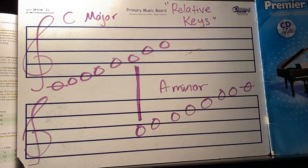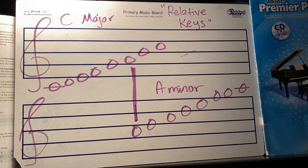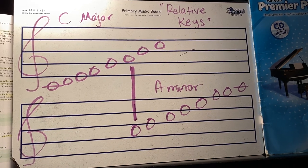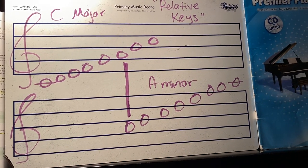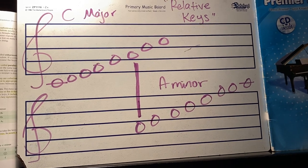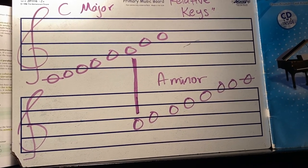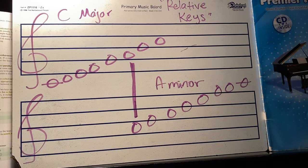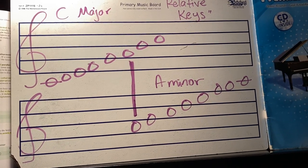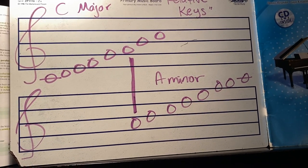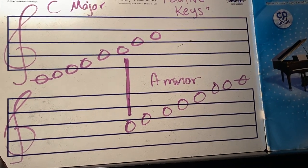In this video I'm going to talk about relative keys. For every major scale there's a relative minor scale that has the exact same notes but starts on a different tonic note, and for every minor scale there's a relative major scale — same notes, just a different starting point or tonic.